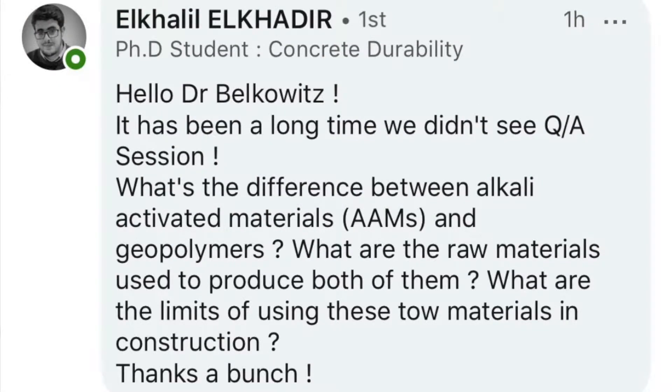What's the difference between alkali-activated materials and geopolymer? What are the raw materials used to produce both of them? What are the limits of using these two materials in construction? So let's start out with AAMs. Alkali-activated materials are any type of aluminum-rich materials that are activated by a water glass, an alkalized solution. That's why they're called alkali-activated. So you have a dry powder and you pour a liquid or water glass that has certain alkalis in it that activate that powder, turn it into a solution, and then a hardened paste that we can use in the construction of a concrete composite.